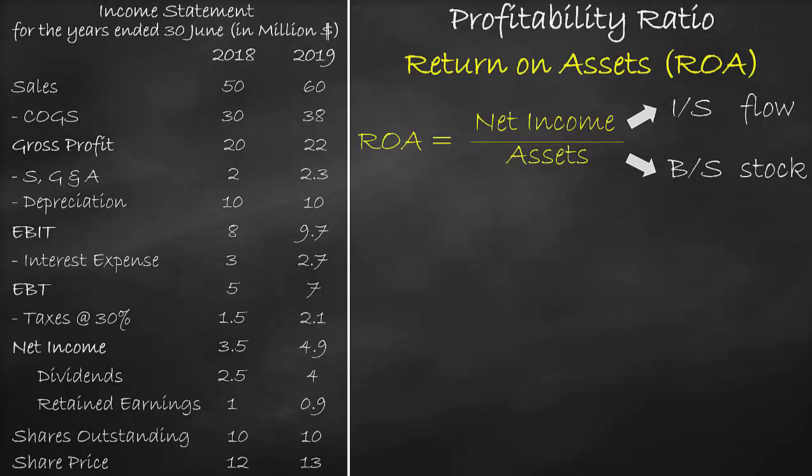So we will use one income statement and two balance sheet items. In summary, any time you find a financial ratio that includes an item from the income statement and an item from the balance sheet, you will have to use the income statement item and get the average of the balance sheet items. So we can rewrite the ROA as net income divided by average assets.